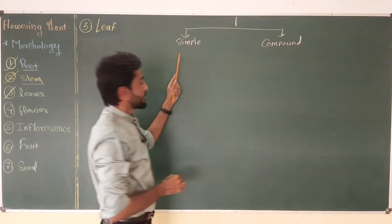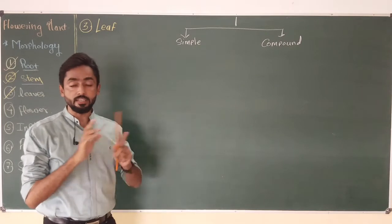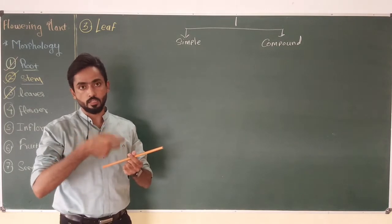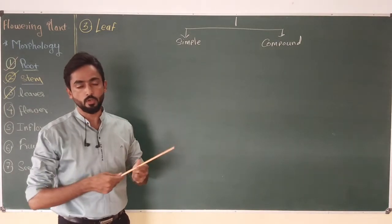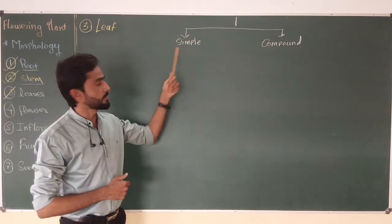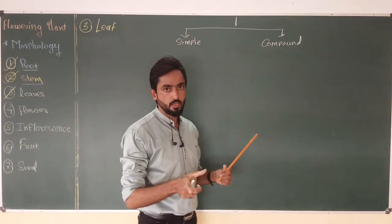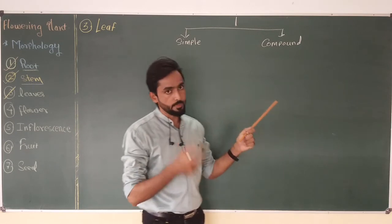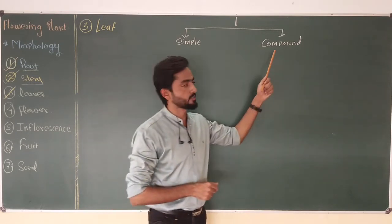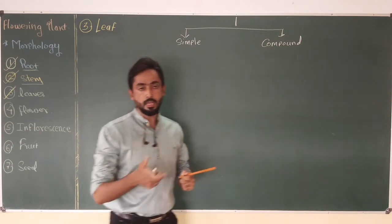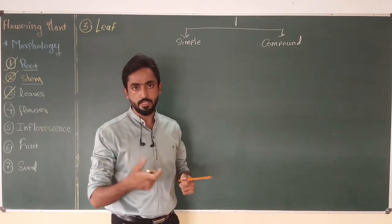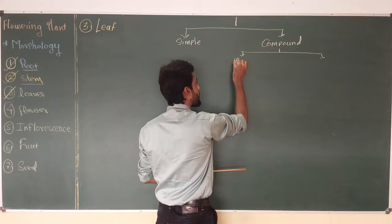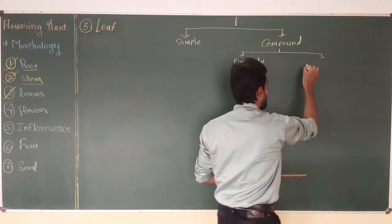A simple leaf is one in which the leaf blade or lamina is intact and does not show any incision. If incisions are present, they are not touching the mid-rib, so the entire leaf looks single. In a compound leaf, the incision penetrates up to the mid-rib, dividing the leaf into small segments. There are two types of compound leaf: pinnately compound and palmately compound.